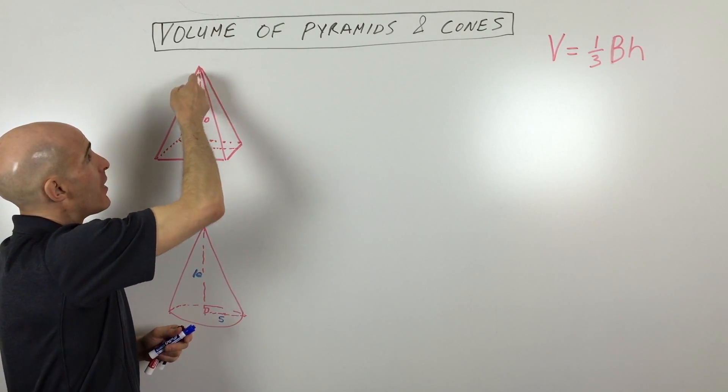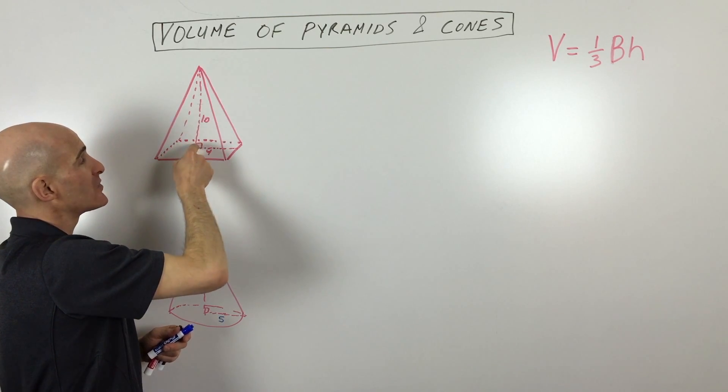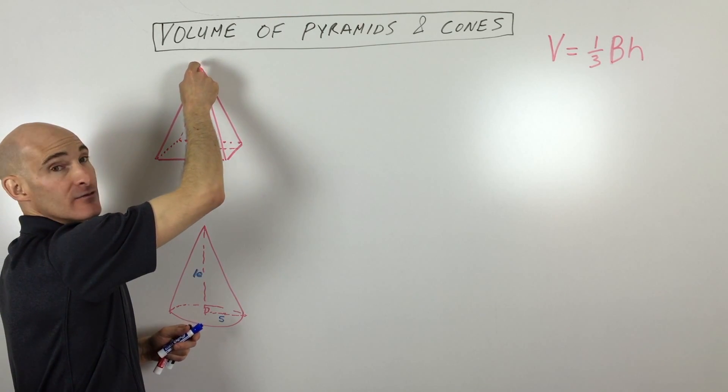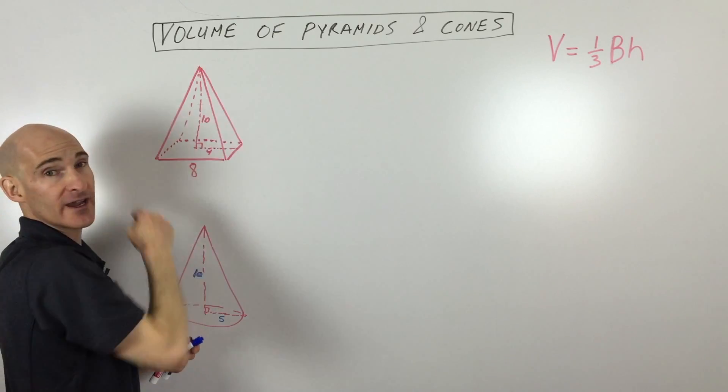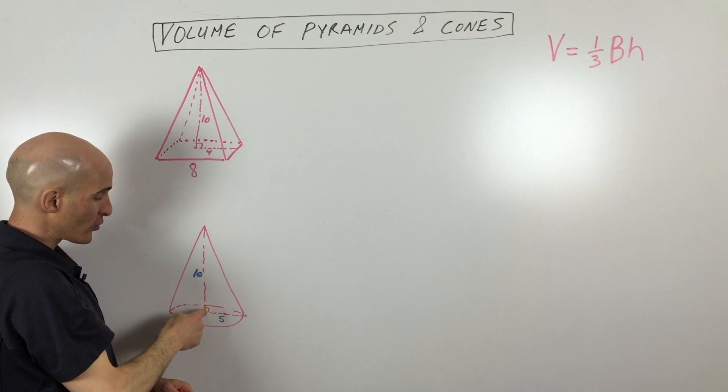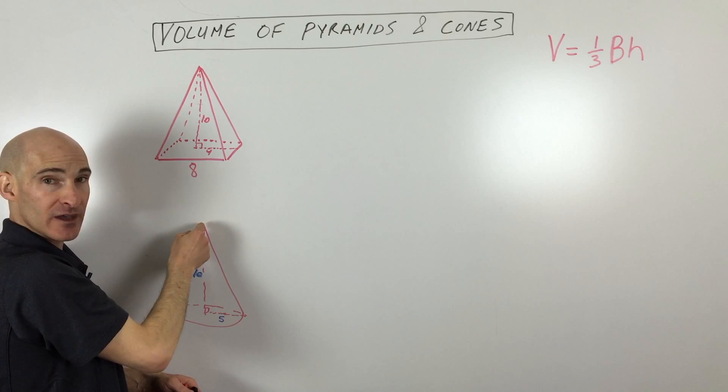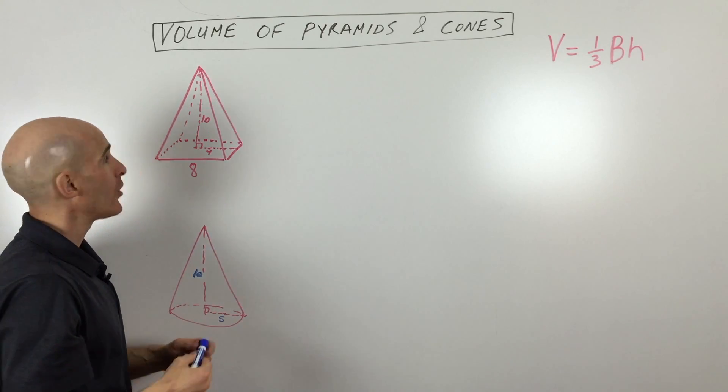Here we want the perpendicular height, the perpendicular distance from the center of the base to the vertex here. That's the overall height. Same thing with the cone. We're going from the center of the base, perpendicular to the vertex right there.